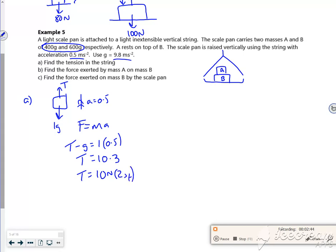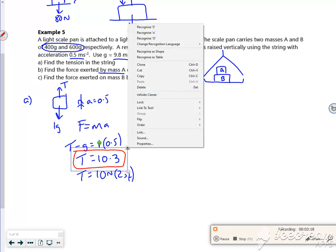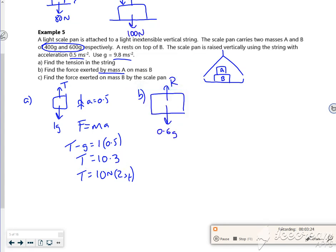Now B says, the force exerted by mass A on mass B. So here we go, we've got mass B, so mass B is 600 grams, so 0.6G. It's got a resultant force pushing up, but what it's also got is this other force pushing down on it, it's got A pushing down on it.